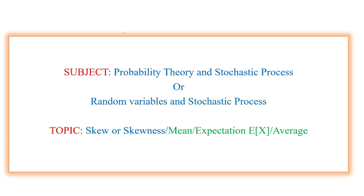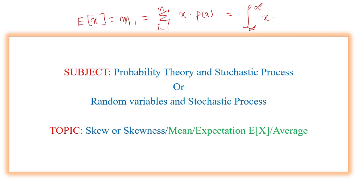Coming to skew — skew is an averaging process for random variables, but it is a third averaging process. We know that the first mean, or first averaging process, is denoted with E of X. Expectation is also called mean or average. The first mean is defined as sigma i equal 1 to n of x into probability of x. If it is a continuous random variable, that is the integral from minus infinity to plus infinity of x into f of x dx. This is for continuous random variable and this is for discrete random variable mean.